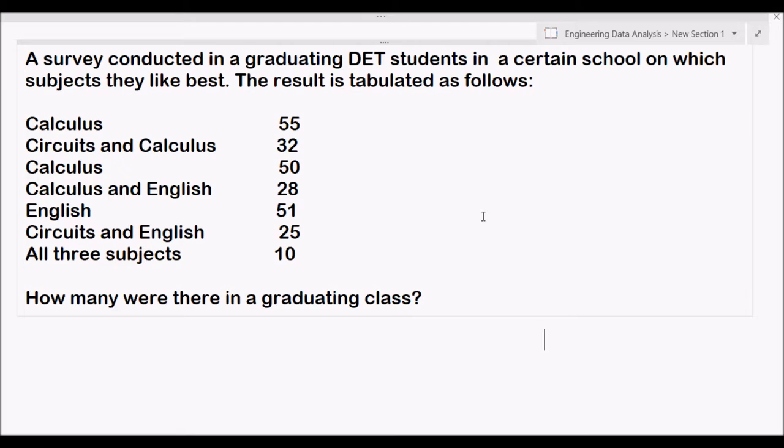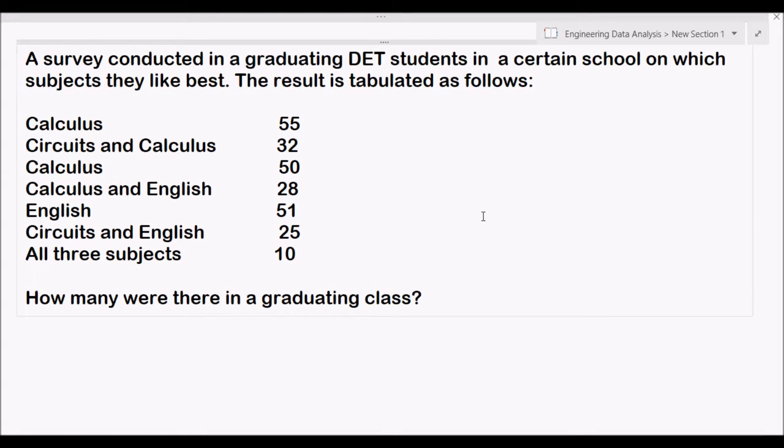Mirian, can you read the problem? Okay, so we are required to solve for how many are there in a graduating class. Given the following results of the survey, this is a basic survey involving three subjects which graduating DET students like best. I believe this is not our school because as of now, our graduating DET students is zero. In the third year, there are no graduates for that.